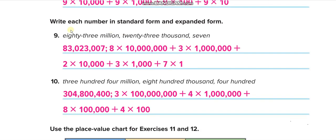Now they give us in word form and we have to write in standard form and expanded form. Eighty-three million: we write 83, then a comma, and start the thousands period. Twenty-three thousand: we cannot just write 2 and 3 — that would become two hundred thirty. So we write 2 in the ten-thousands place, 3 in the thousands place, and zero in the hundred-thousands place. Seven only in the ones period means 007, filling remaining places with zeros.